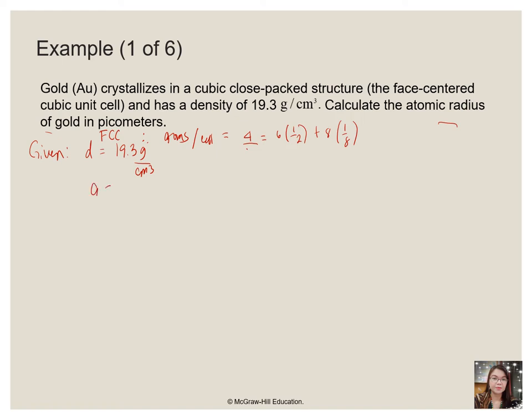Therefore, A is equal to the square root of 8 times R. So if we want to identify the radius, the formula is just equal to A over the square root of 8. But how can we get A? We can get A by calculating first, taking note that density is equal to mass per unit volume. We can get the volume so that we can substitute it and get A. So once we can get the volume, we can get A, then we can solve for R.